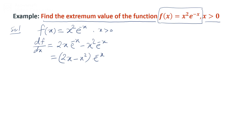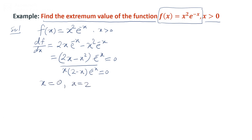After simplifying, we can write e^(-x)(2x - x²). For an extreme value we set df/dx = 0, that is the slope is zero. Solving x(2 - x)·e^(-x) = 0, we obtain two points: x = 0 or x = 2. These two points are called stationary points.